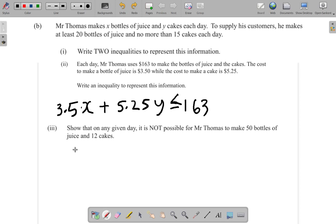50 bottles of juice. 50. How much would it cost him to make that? That would be 3.5 times 50 plus 5.25 times, and it says 12 cakes. 12 equals how much money?